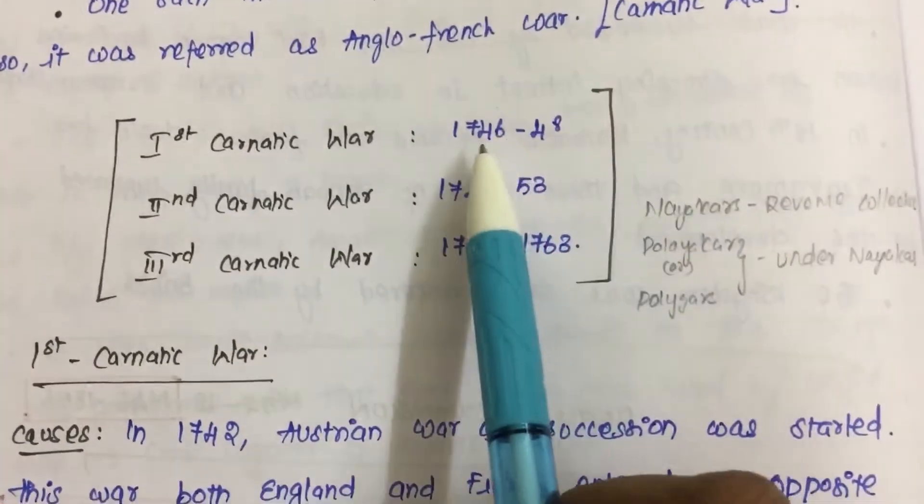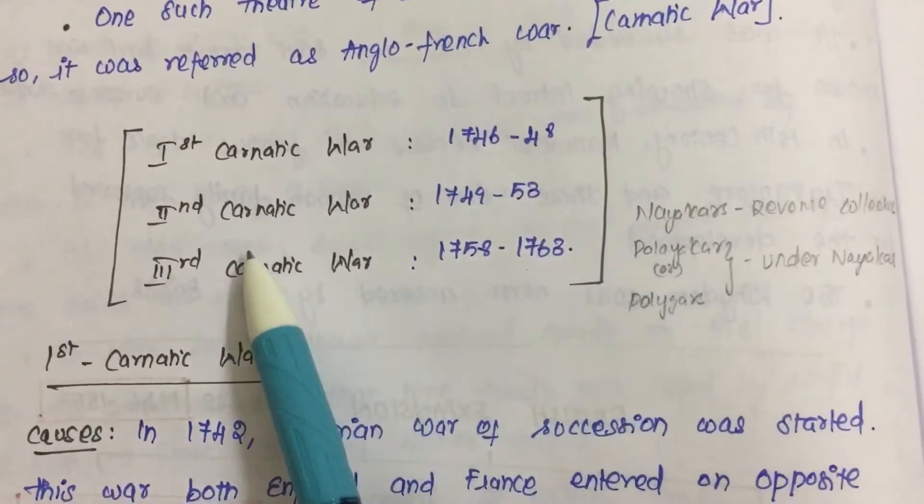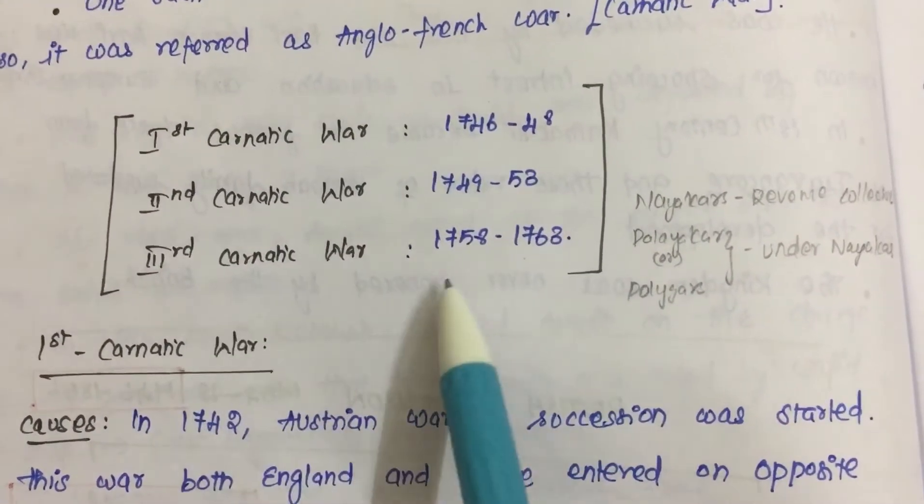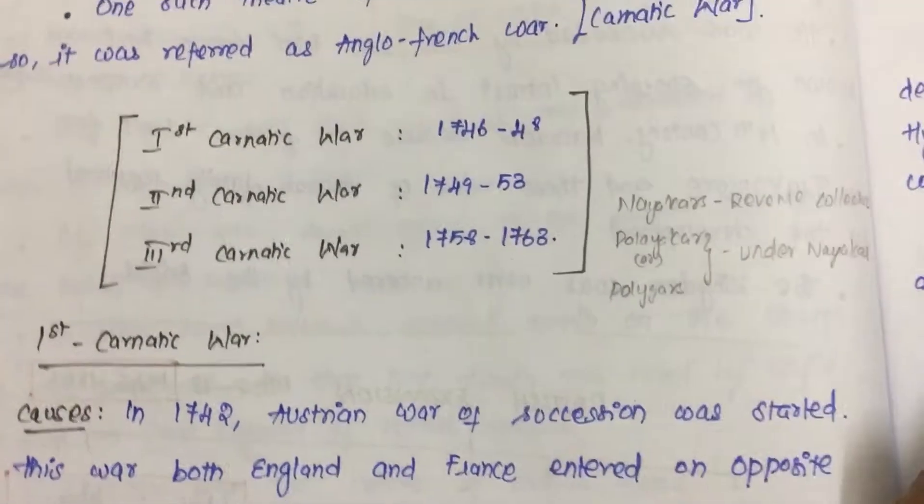First War is 1746-48, second 1749-53, and third is 1758-63. The Carnatic War is very simple.